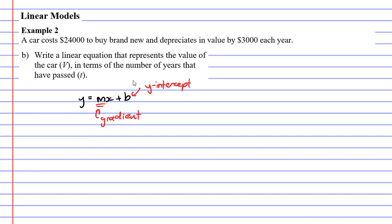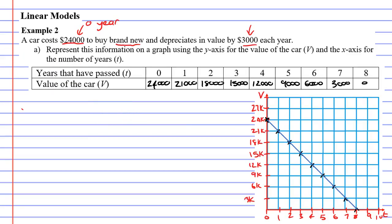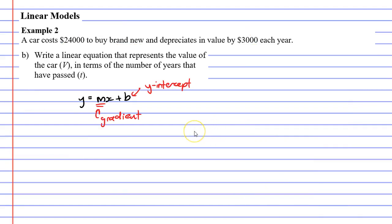And all we need to do to find these is to look at the previous graph. Y-intercept is the easy one. The Y-intercept is where it crosses the Y-axis. Now, it's not called the Y-axis anymore. It's called the V-axis. But we know that if it's the Y-axis, we're just talking about the vertical axis. So it crosses there at 24,000. So we know that B is going to be 24,000. Now we need to find the gradient.